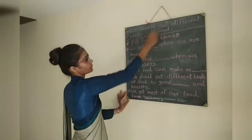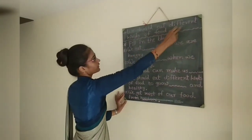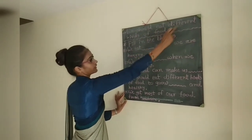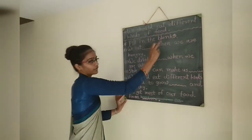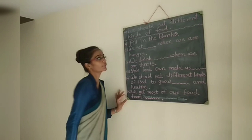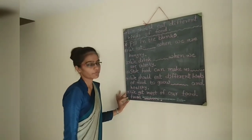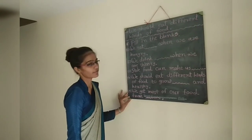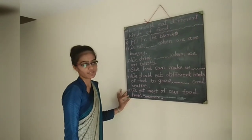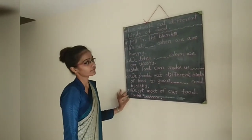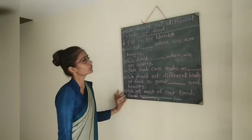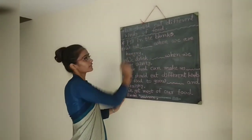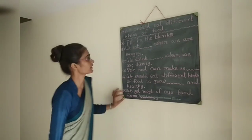We should eat different kinds of food — for example, wheat, rice, dal, beans, nuts, chicken, fish, and vegetables. We should eat all these different kinds of food because it makes us strong and healthy.